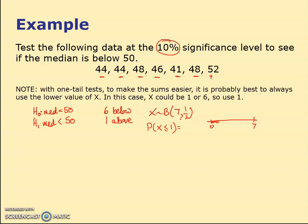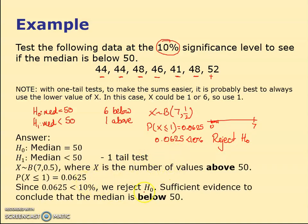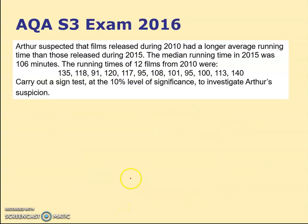Binomial CDF, doing it seven times, 0.5, giving 0.0625. It's a one-tail test, so 0.0625 is lower than 10%, so I reject H0. Whenever you get a smaller probability than the significance level, you reject H0. Sufficient evidence to conclude that the median is below 50.